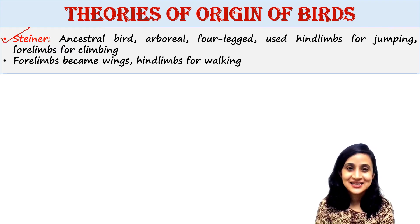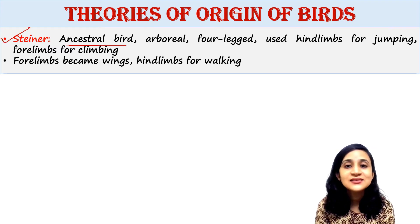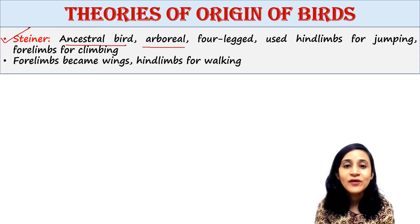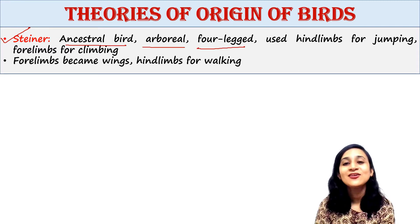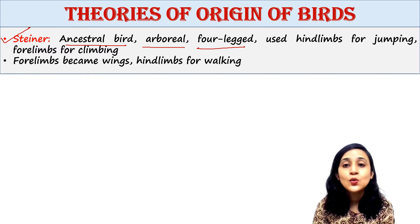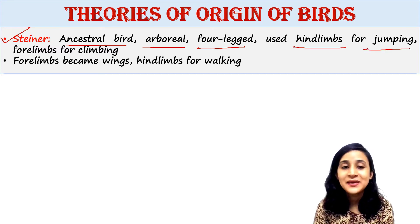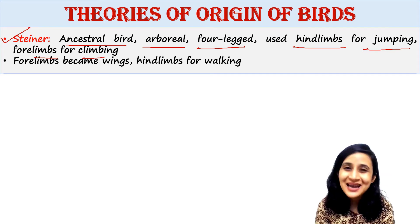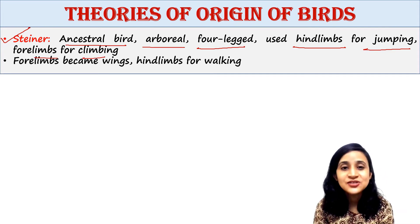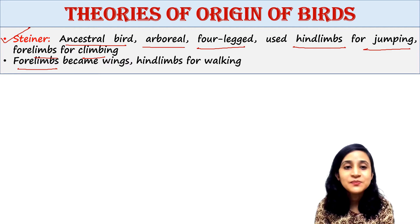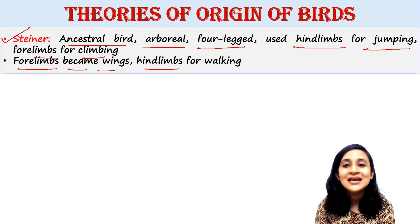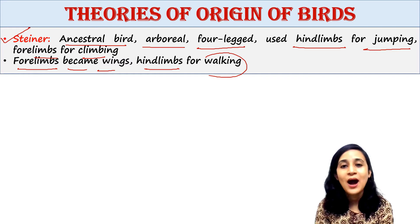The next theory was given by Stainer. He suggested that the ancestral bird was an arboreal four-legged creature who used hind limbs for jumping and forelimbs for climbing. Later, the forelimbs became wings and hind limbs remained for walking.